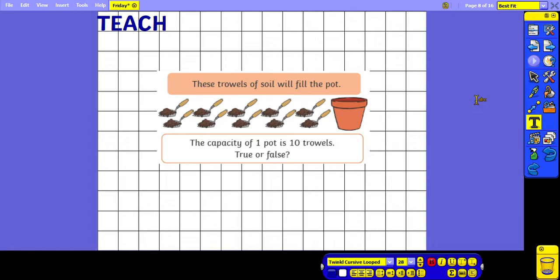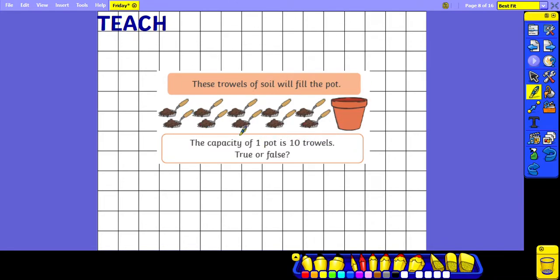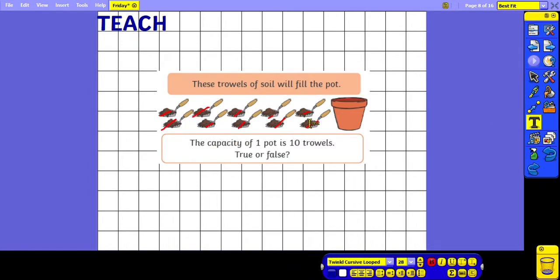Okay, these trowels of soil will fill the pot. The capacity of one pot is ten trowels, true or false? So we know that these trowels in the picture fill the pot up, so we need to work out how many that is. One, two, three, four, five, six, seven, eight, nine, ten. So we know that these ten trowels fill up the pot, so the capacity of the pot is ten trowels, and therefore the statement is true.